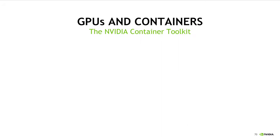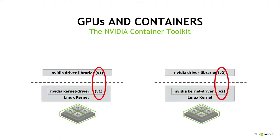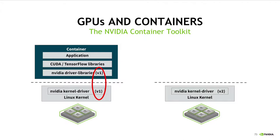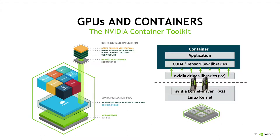Now that we understand MIG a bit better, I'm going to switch gears and give a brief overview of how we support full GPUs in Kubernetes today. The first thing to note is that unlike most containerized applications, NVIDIA GPU-enabled containers require extra runtime support in order to guarantee that they run on machines with different NVIDIA GPU driver versions installed. If the set of NVIDIA driver libraries in user space don't match the exact version of the NVIDIA kernel module running on the host, then applications linking to those libraries will fail to run.